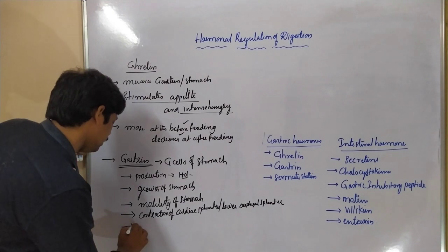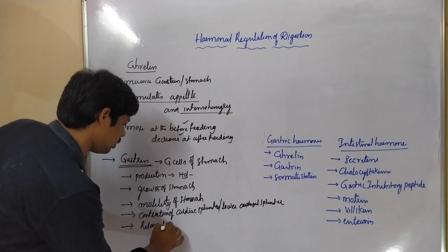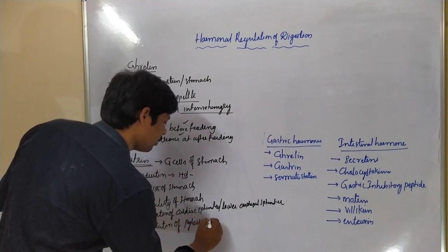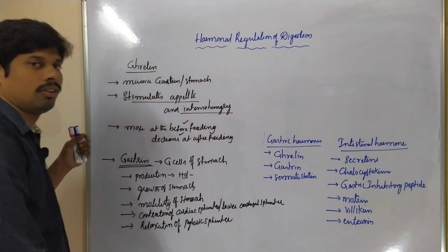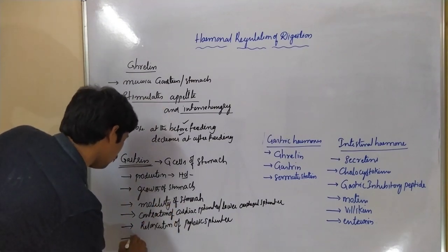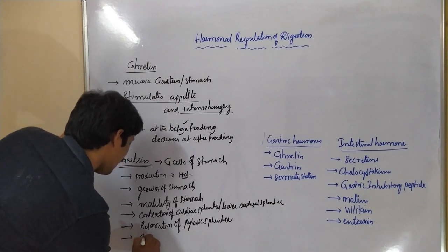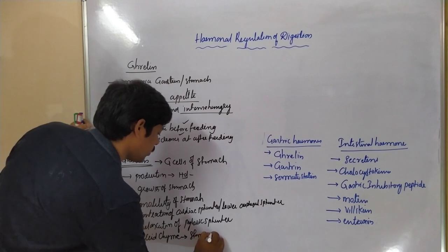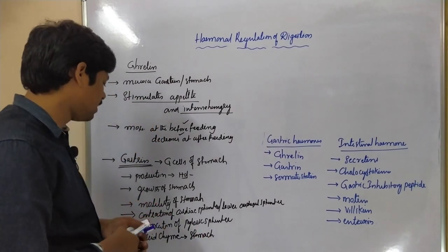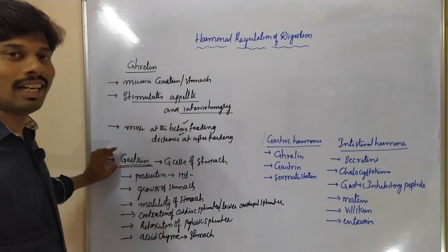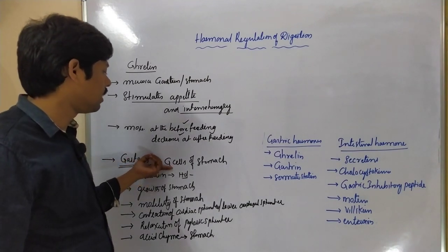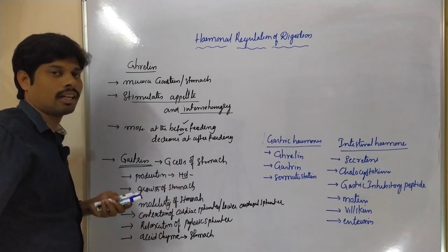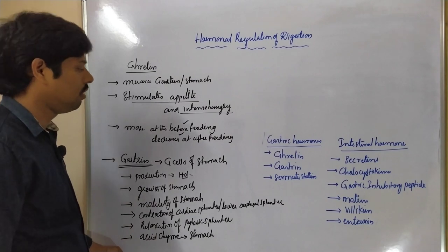Gastrin also induces relaxation of the pyloric sphincter. These hormones increase when acid chyme is present in the stomach. The acid chyme stimulates production of gastrin, which acts on the G cells to induce high production of HCl. This HCl acts on the food particles for digestion.